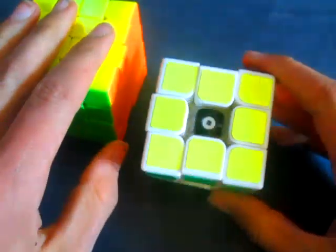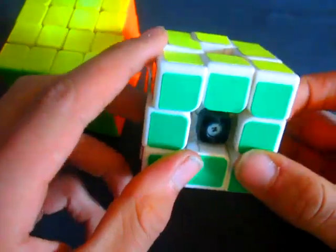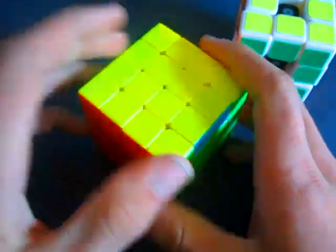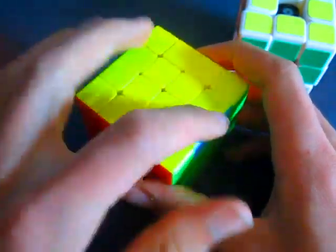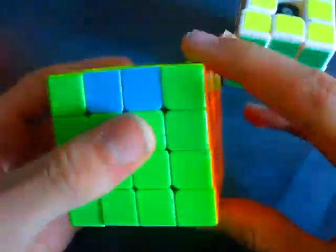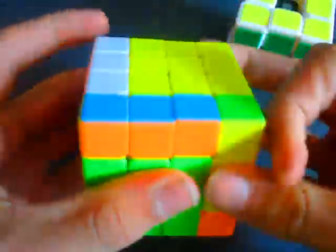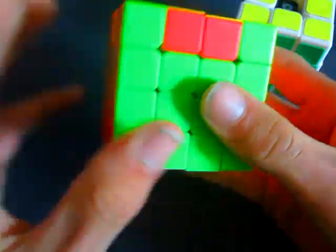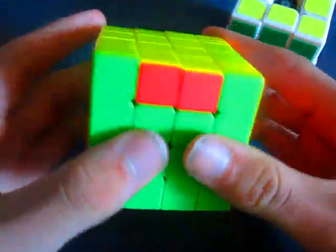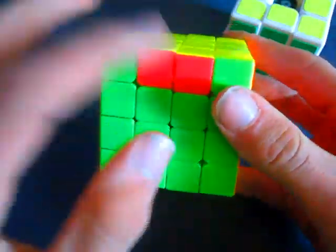The second one, which you can get on this 3x3, is called PLL parity. It's where either two edges are flipped on the opposite side. And then you could get either two sides solved. Or you could get something like this. Or this needs to be here. But these two are flipped. Or these two are flipped. It's just like where two edges are flipped and where they're not supposed to be.